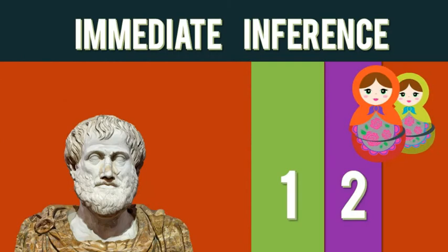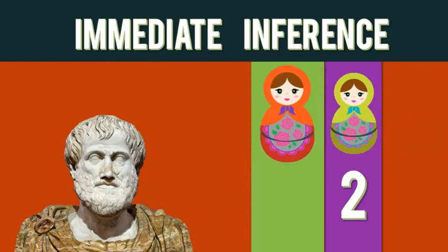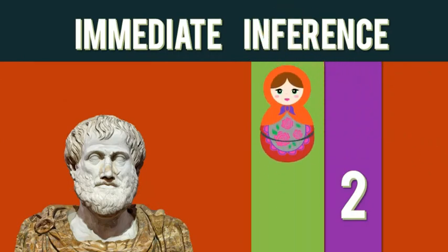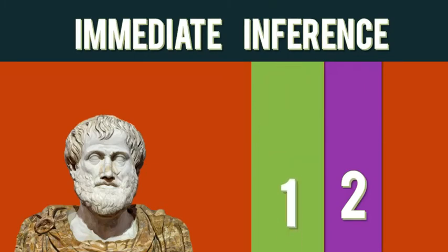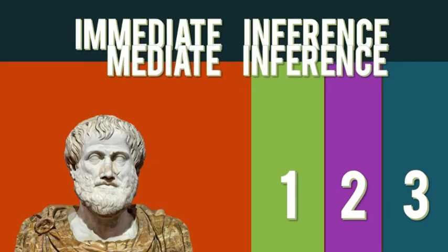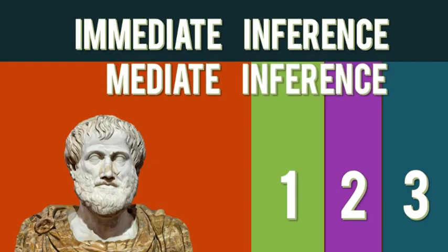Just as you understood that the blue doll was inside the green doll via an immediate inference, that's the same way that lets you know the green doll is inside the red one. So you have two immediate inferences. The third statement — the conclusion — is not an immediate inference because it doesn't come from either statement alone. It's instead mediated by the other two, hence it is a mediated inference.